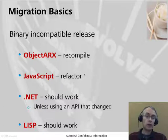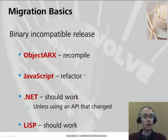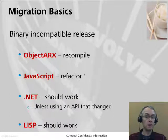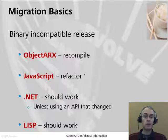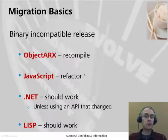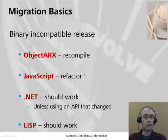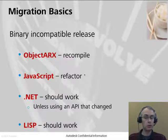So what does it mean for your application? If you're an ObjectARX developer, you have no shielding from the compiler used to build AutoCAD, so you must compile your ObjectARX C++ DLLs using exactly the same Visual C++ compiler — you'll have to recompile and almost certainly refactor some code. The JavaScript API has changed significantly, so you'll need to refactor that code as well. For .NET, you may get away without recompiling, unless you use an API that has changed. LISP remains completely compatible and should work without any changes.